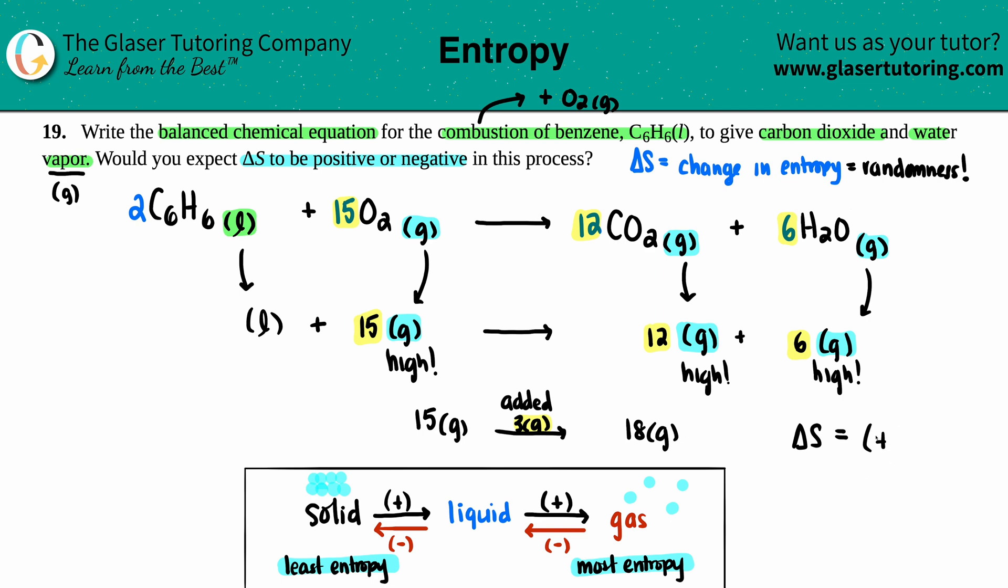So it'd be positive because you have more gas in product than in the reactant. But if it was vice versa, if you took away gases and you had less in the products, then it would be negative. So delta S is positive because you have more—we have more gas in products. And that is the final answer.